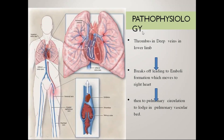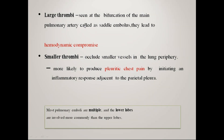Now we have to discuss the pathophysiology. Thrombus in the deep veins of the lower limb breaks off, leading to embolus formation, which then moves to the right heart and into the pulmonary circulation, lodging in the pulmonary vascular field. Large thrombus seen at the bifurcation of the pulmonary artery is called a saddle embolus and leads to hemodynamic compromise. Smaller emboli obstruct smaller vessels in the lung periphery, more likely to produce pleuritic chest pain by initiating an inflammatory response adjacent to the pleura. Most pulmonary emboli are multiple, and the lower lobes are more commonly involved than the upper lobes.